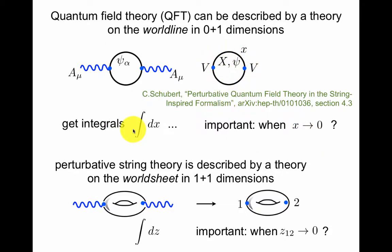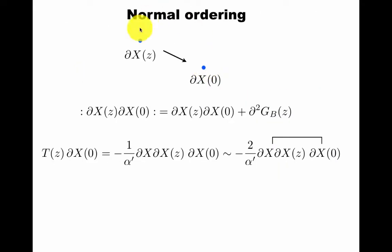In perturbative string theory, questions are very similar. There's a world sheet in one plus one dimension, so space and time, although we might go Euclidean and have two space. The important question is, when does the integral of the distance between these two vertices, what happens to it when the distance goes to zero? When an operator comes close to another operator, is there a singularity?